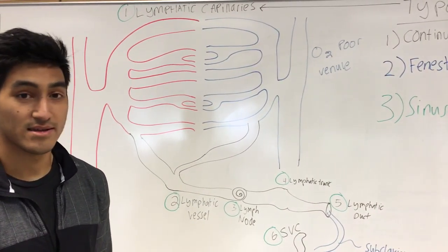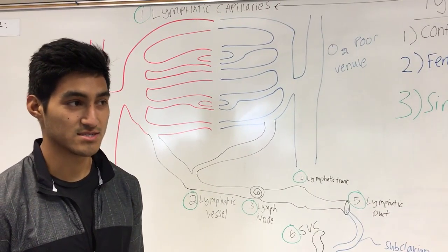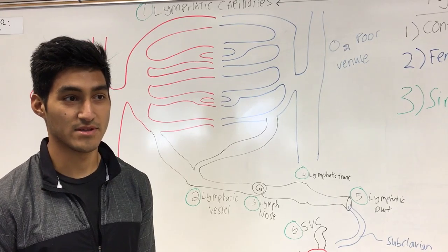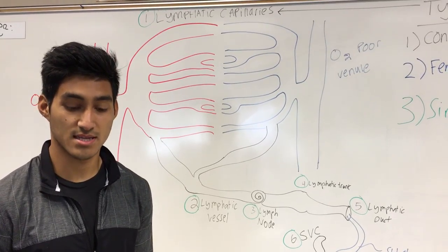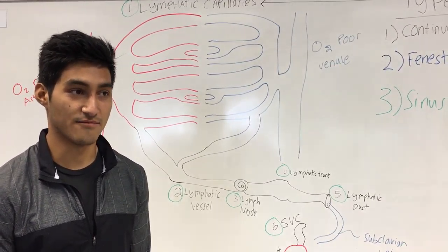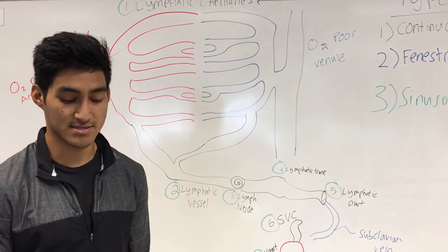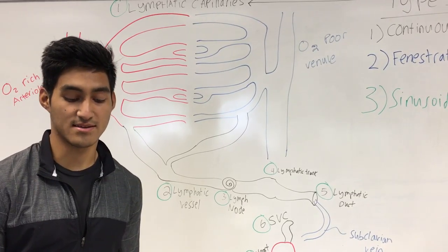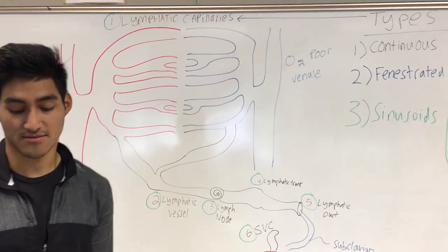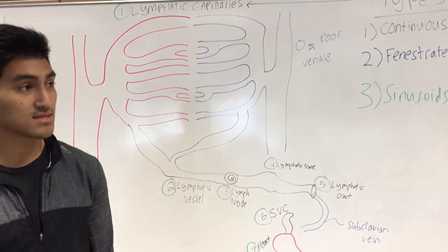The second function is like security checkpoints — the lymph nodes and the spleen — and it takes action against infections and invading microbes, cancer cells, and foreign objects.